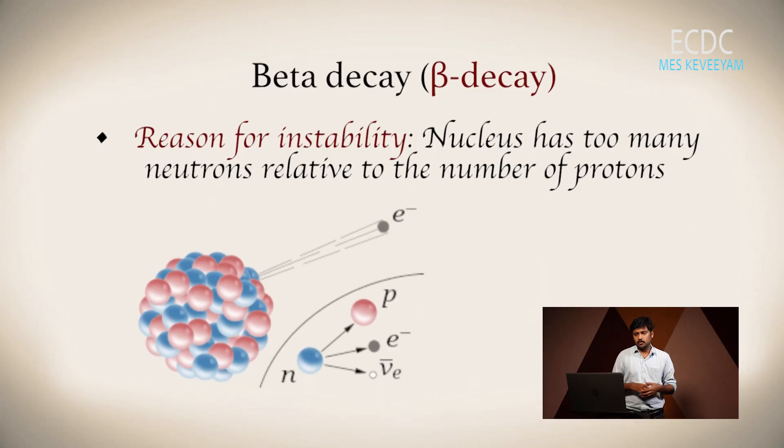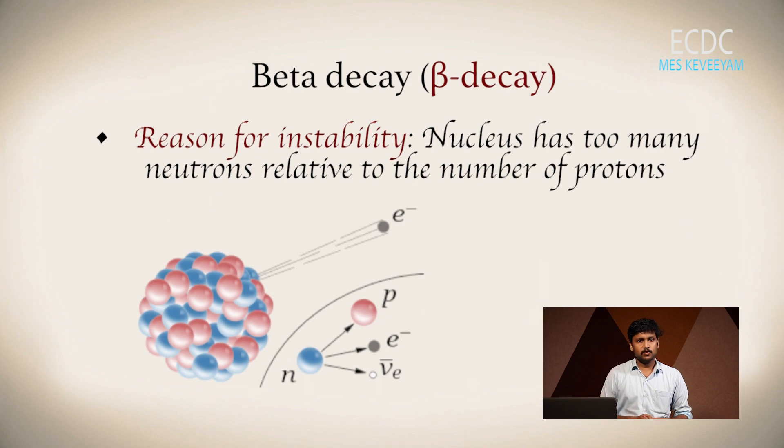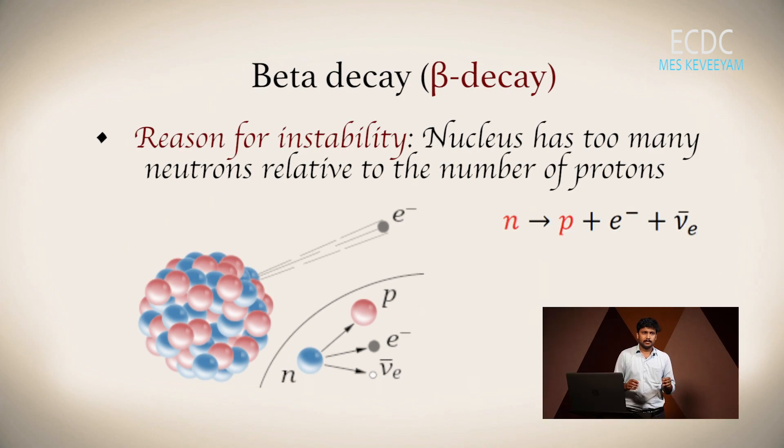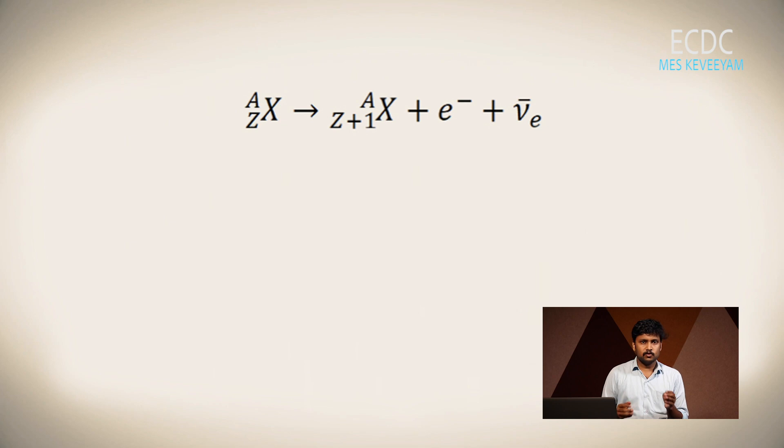Beta decay occurs if the number of neutrons is too much compared to the number of protons. In such cases, a neutron changes to a proton with the emission of an electron and antineutrino. The equation is: neutron gives proton plus electron plus antineutrino. The atomic number will increase by one because the number of protons increases.